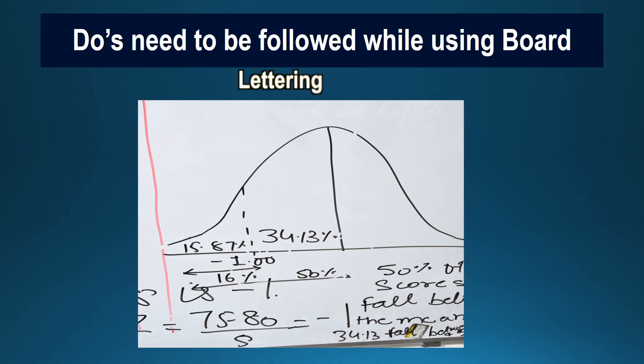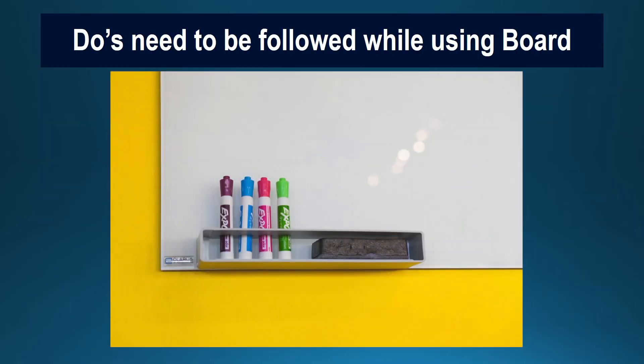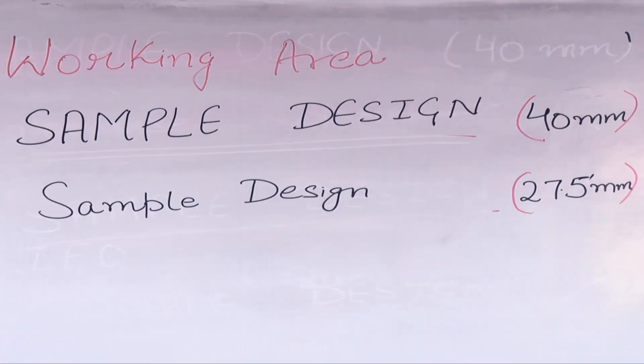While writing on the board, lettering is an important aspect to consider. The board writing must be large enough to be seen by the most distant student in your class. The teacher can also use different colours of markers or chalk when writing on a blackboard to make the presentation effective. Usually, the size of the font for capital letters is 40 mm and for smaller letters it is 27.5 mm.